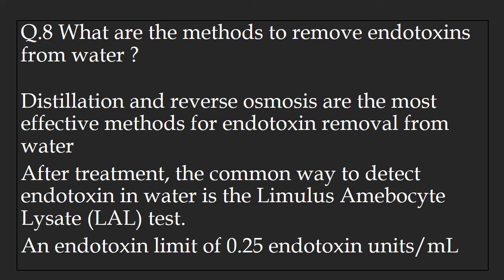Question number 8: What are the methods to remove endotoxins from water? Distillation and reverse osmosis are the most effective methods to remove endotoxins from water. After treatment, the common way to detect endotoxins in water is to perform the Limulus Amoebocyte Lysate (LAL) test. The endotoxin limit of WFI as per USP is 0.25 endotoxin units per ml.